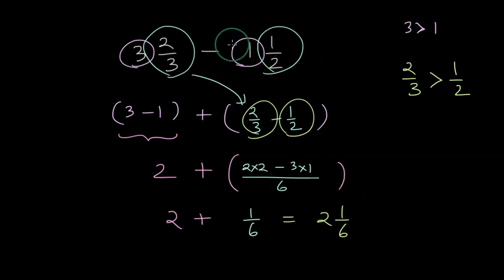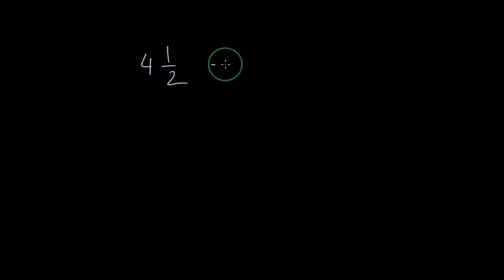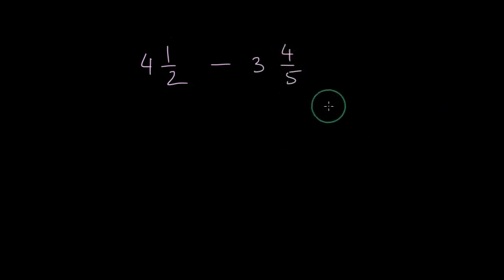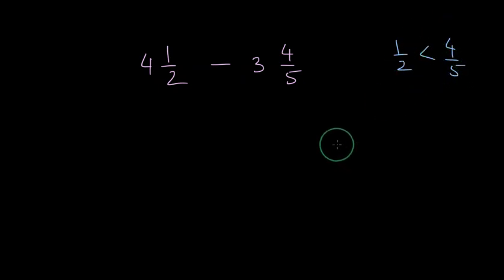Things would have changed if the fraction part on the left-hand side was less than the fraction part on the right-hand side. In that case, the best way to perform subtraction is to convert them into improper fractions. Let's say we had 4 wholes and 1/2 minus 3 wholes and 4/5. You can see that the fraction on the left-hand side is less than the fraction on the right-hand side. If you don't know which one is greater, you can quickly do cross multiplication and check the numerators — 5 versus 8 — so the right-hand side fraction is greater.